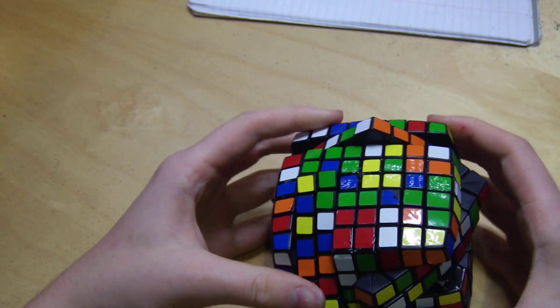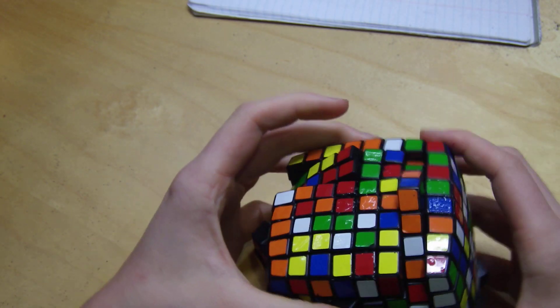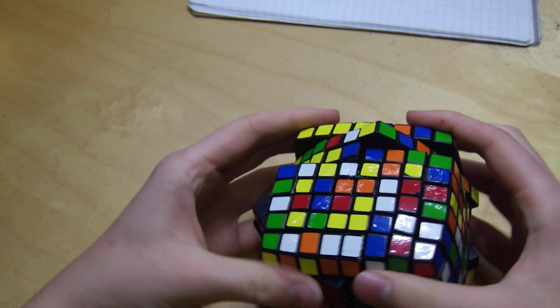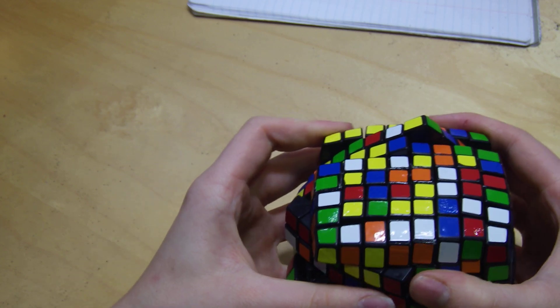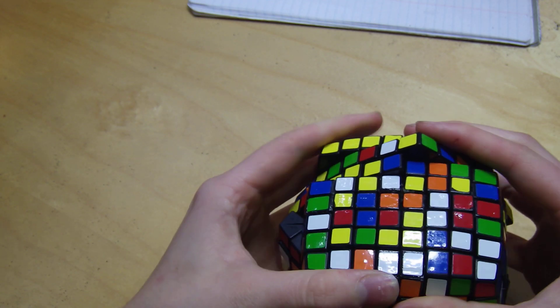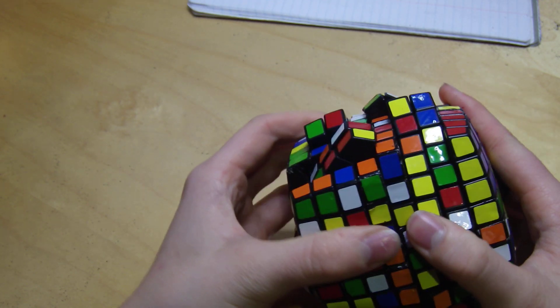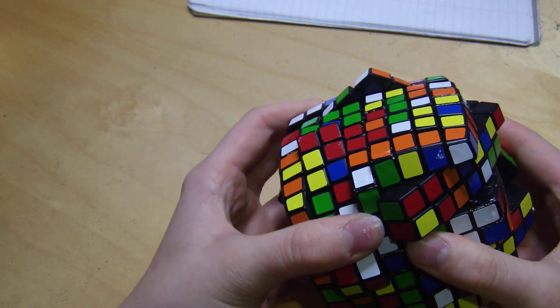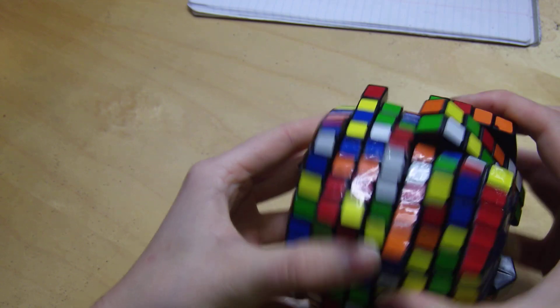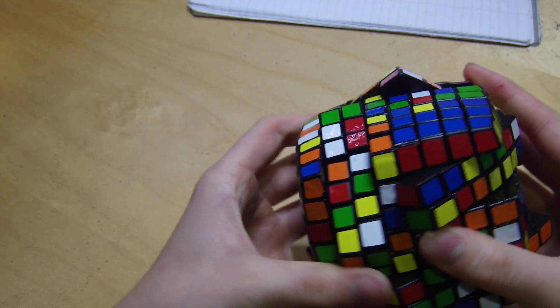So it doesn't actually shape-shift that much before it really bandages up. But the 2x2 turns can always happen because the bandaging will never bandage the 2x2. But it will bandage all the other layers.